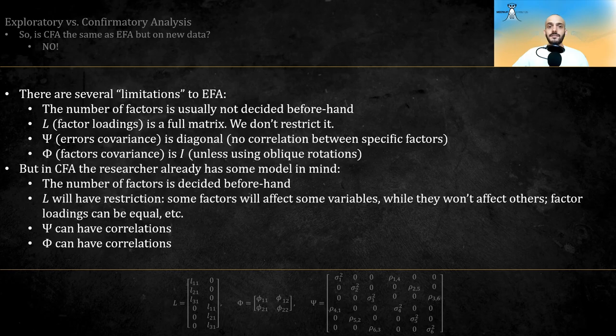But in CFA, the researcher already has some model in mind, and so the number of factors could be decided beforehand. L will probably have restrictions. Some factors will affect some variables, while they won't affect others. Also, factor coefficients, for example, can be shared across different variables, making them equal. And psi and phi can also have correlations.